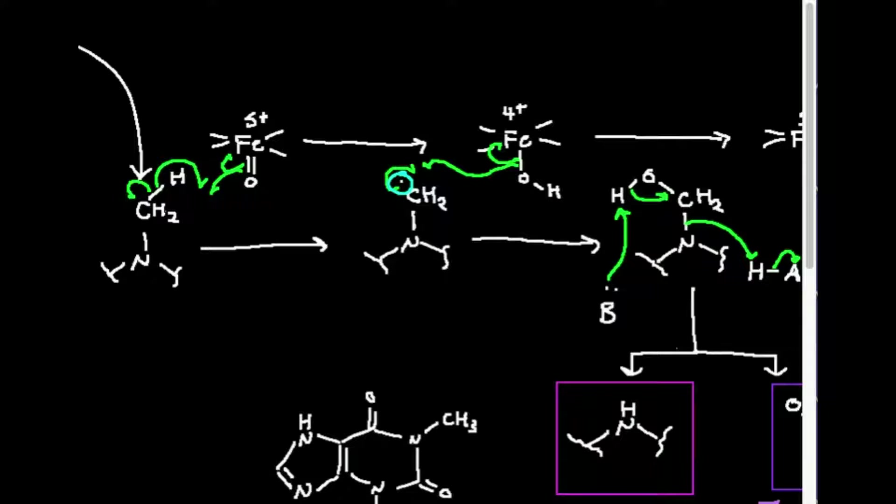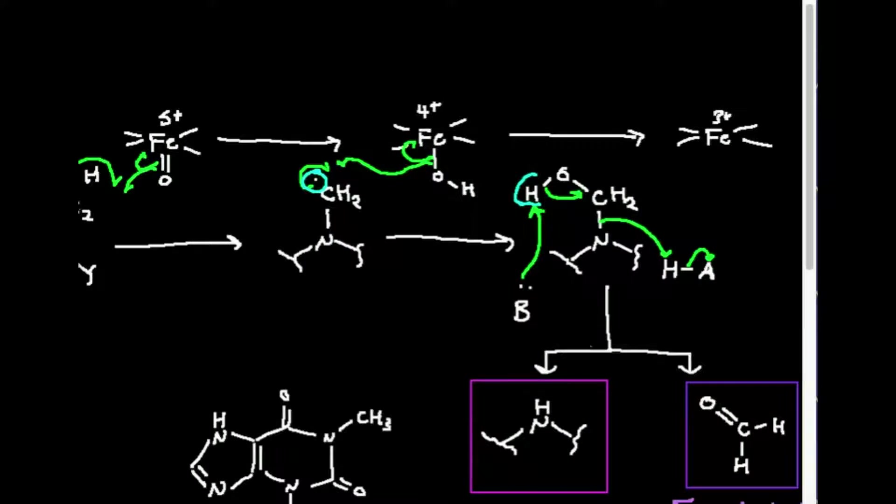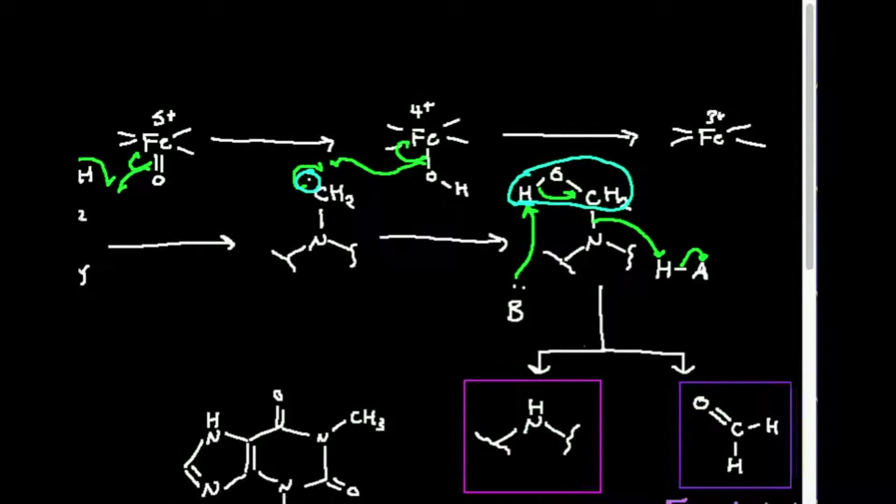Well this last bond that's on here is going to split homolytically. One of the electrons is going to end up on the iron, ultimately reducing it to the 3 plus state, and then this OH is going to couple with this radical electron on the CH2, and what you can see is that effectively makes an alcohol. So I have this OH that's on the CH2, which is attached now still to the caffeine molecule, that's what this nitrogen is part of.